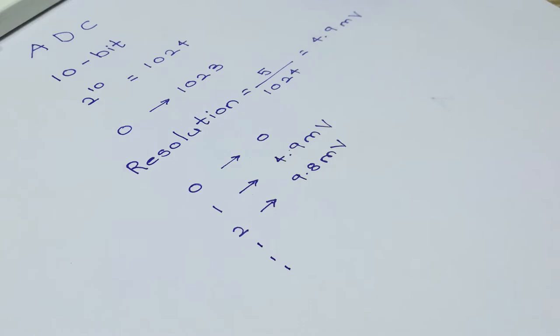That is, 0 will correspond to 0 volts, 1 will correspond to 4.9mV, 2 will correspond to 9.8mV and so on till 1023.